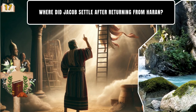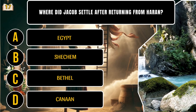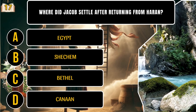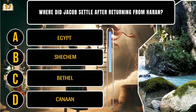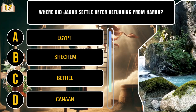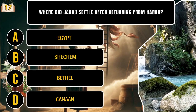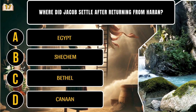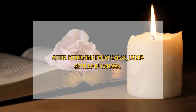Where did Jacob settle after returning from Haran? A. Egypt. B. Shechem. C. Bethel. D. Canaan. That's D. After returning from Haran, Jacob settled in Canaan.